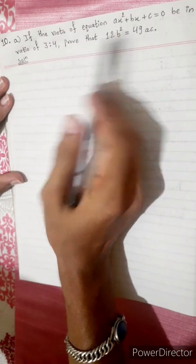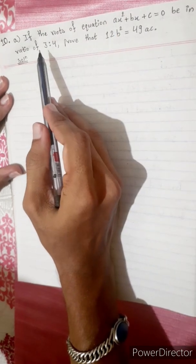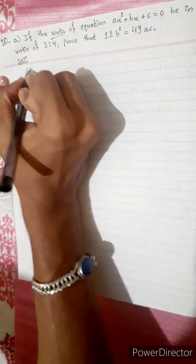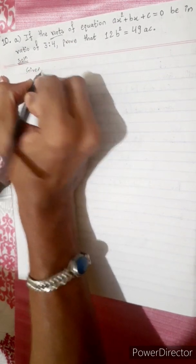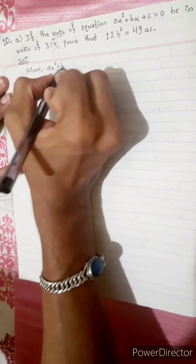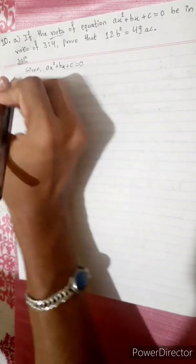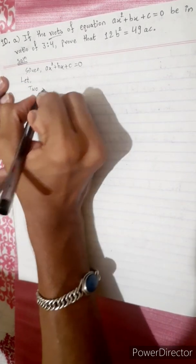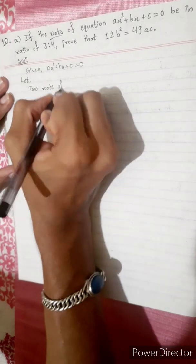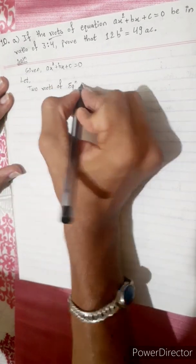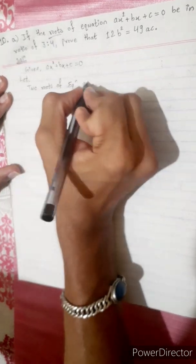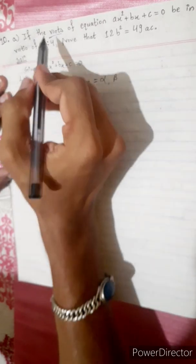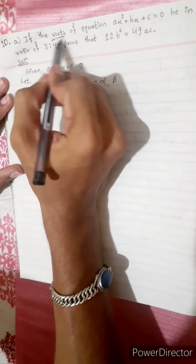If the ratio of roots of the equation is given, the equation is ax squared plus bx plus c equal to zero. The two roots of the equation are alpha and beta.